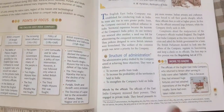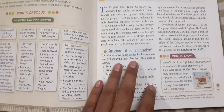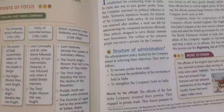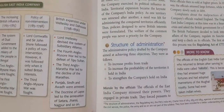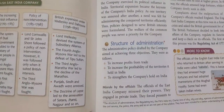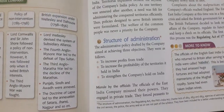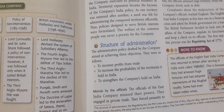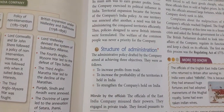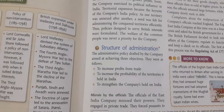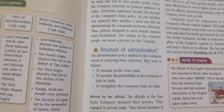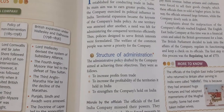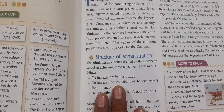Let us talk about the structure of the administration. The administrative policy followed by the British East India Company had three main objectives. The first was to increase profits from trade — the East India Company was mainly a trading company, and they established rule over India so as to increase profits from trade.